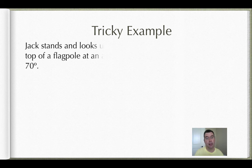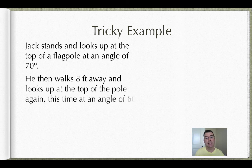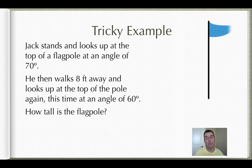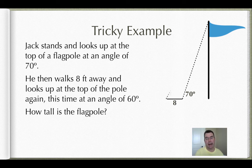Now here's a tricky example. We have Jack standing and looking at the top of a flagpole at an angle of 70 degrees. He then walks 8 feet away and looks up at the top of the pole again, and now this time the angle of elevation is 60 degrees. So how tall is the flagpole? So there's the flag, and then here he is looking up at an angle of 70 degrees. He takes a walk 8 feet backwards, and now when he looks up, it is 60 degrees.